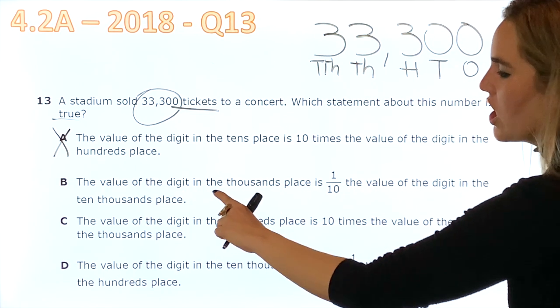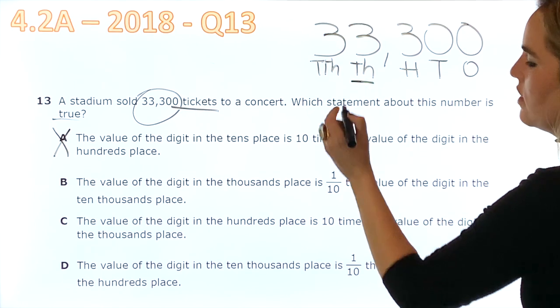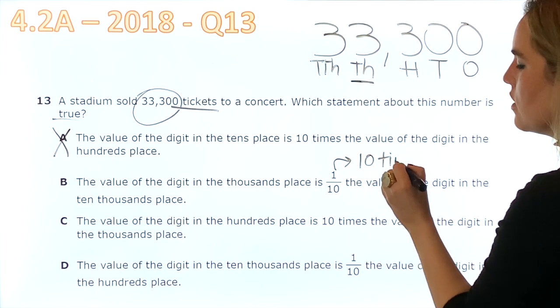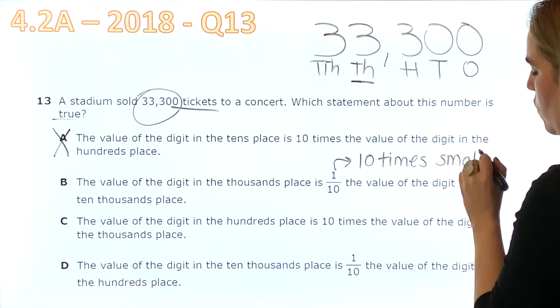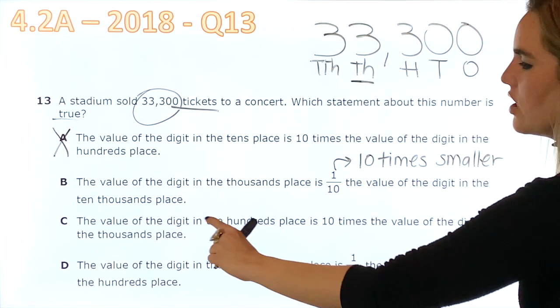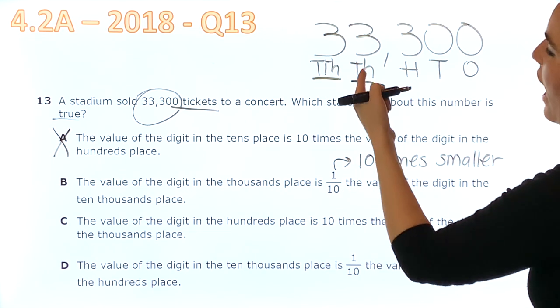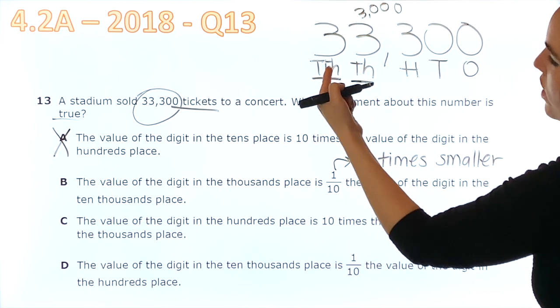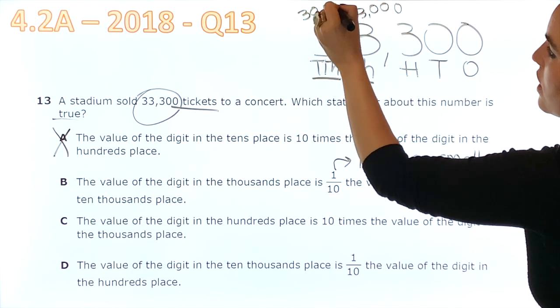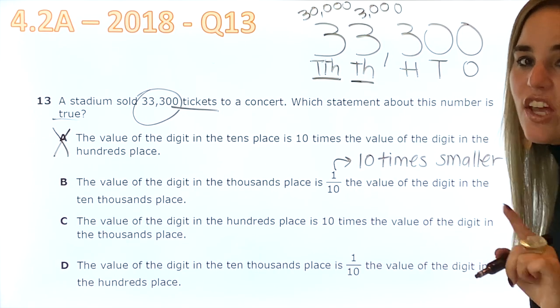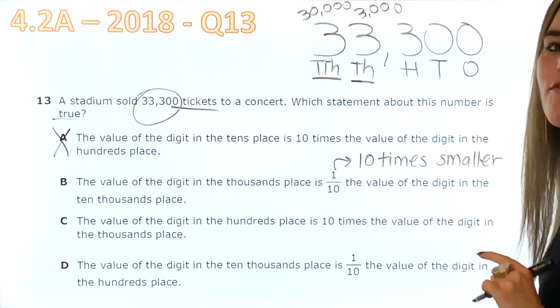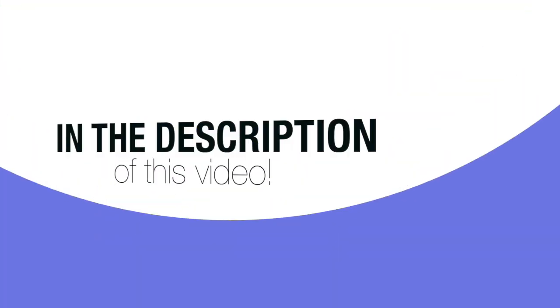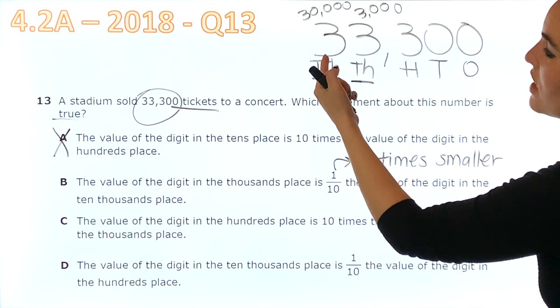Let's see B. The value of the digit in the thousands place, this one, is one-tenth. One-tenth means ten times smaller. The value of the digit in the tens place. Okay, well, I know that this three is 3,000 and this three is 30,000. If you have not seen my place value video, you need to go watch it right now so you see this information. The link to see all the videos in order is on the description of this video.